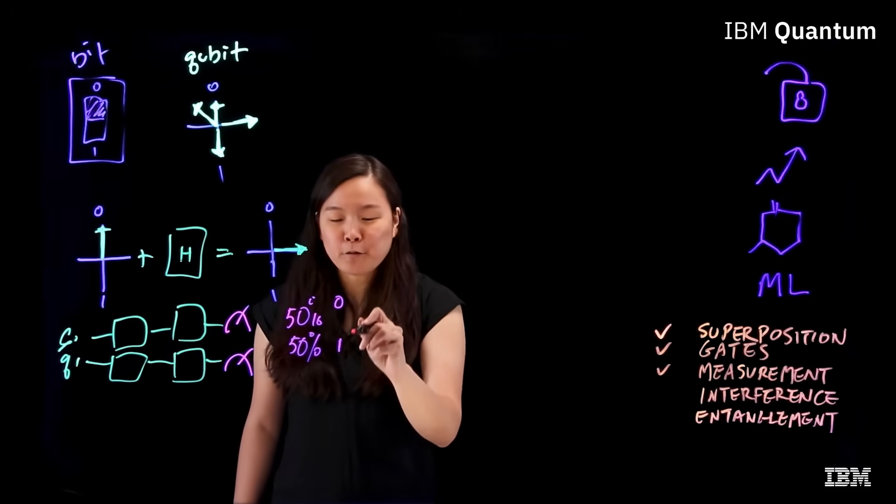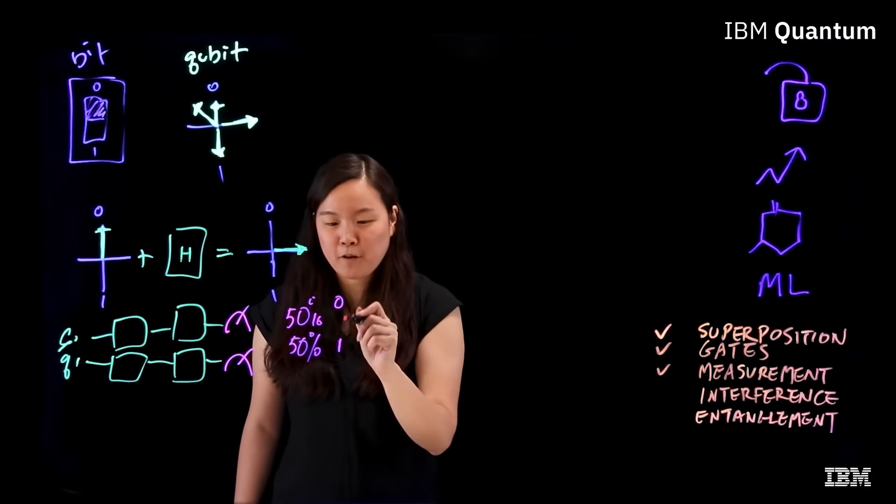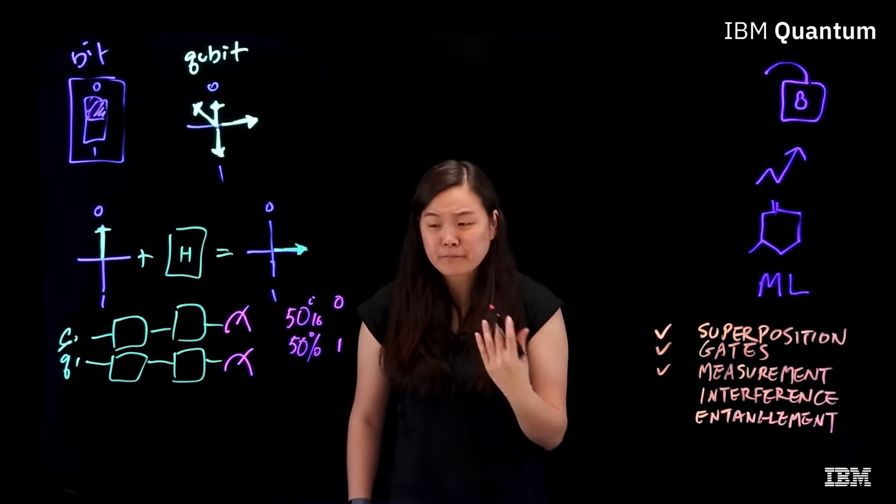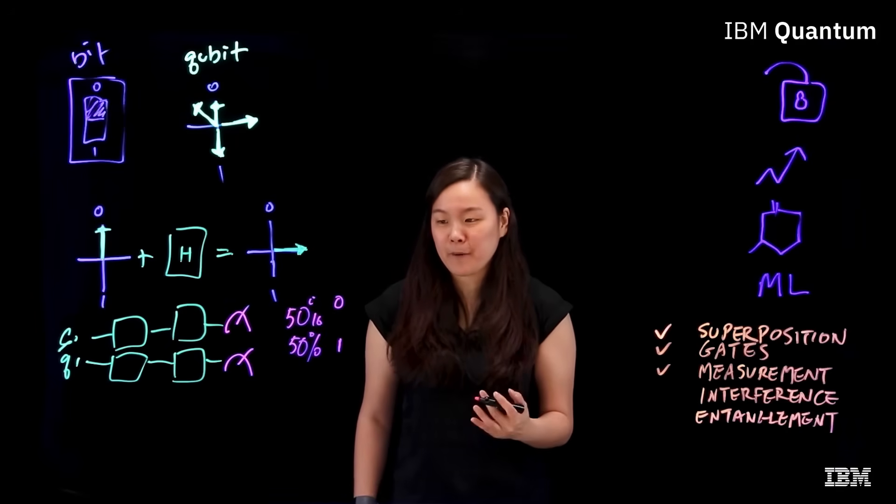It is this in-between state that sometimes people say that a qubit can be a zero and a one at the same time. It also means that just a small number of qubits can represent a large amount of information.